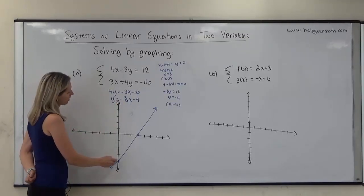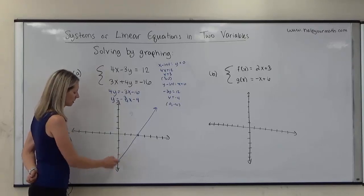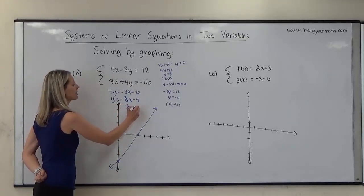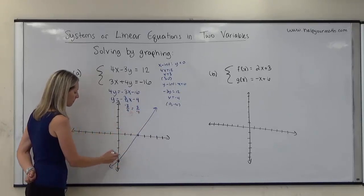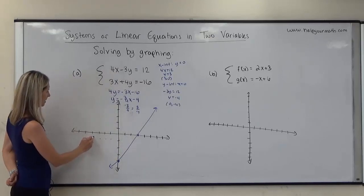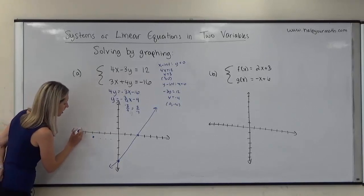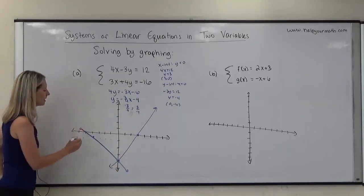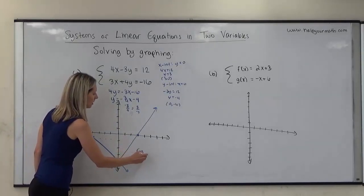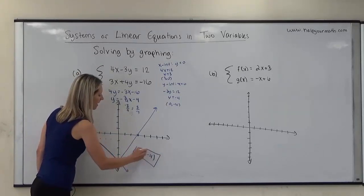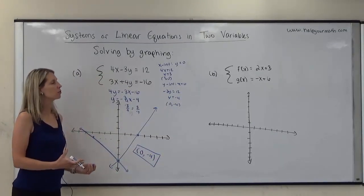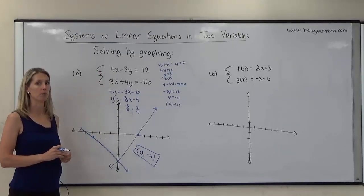The slope is negative 3-fourths. Normally I would go down, but I don't have enough graph, so instead of negative 3 over 4, I'm going to consider it as 3 over negative 4 — going up 3 and to the left 4. We can see that these two lines intersect at the y-intercept, so the solution to this system is (0, negative 4). We could verify that by plugging it into both equations; if wrong, it would make a false statement in one or both.